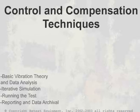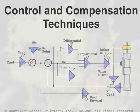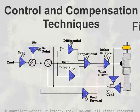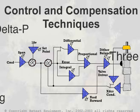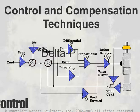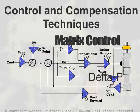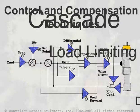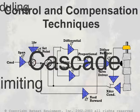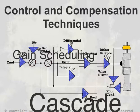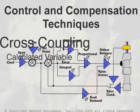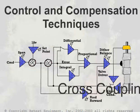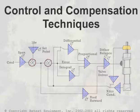At this point we leave the hardware behind and we start talking about the control system. We will take a PIDF loop and break it down into its constituent parts and talk about why we have each part of the loop and how we adjust the parameters and what effects they have.